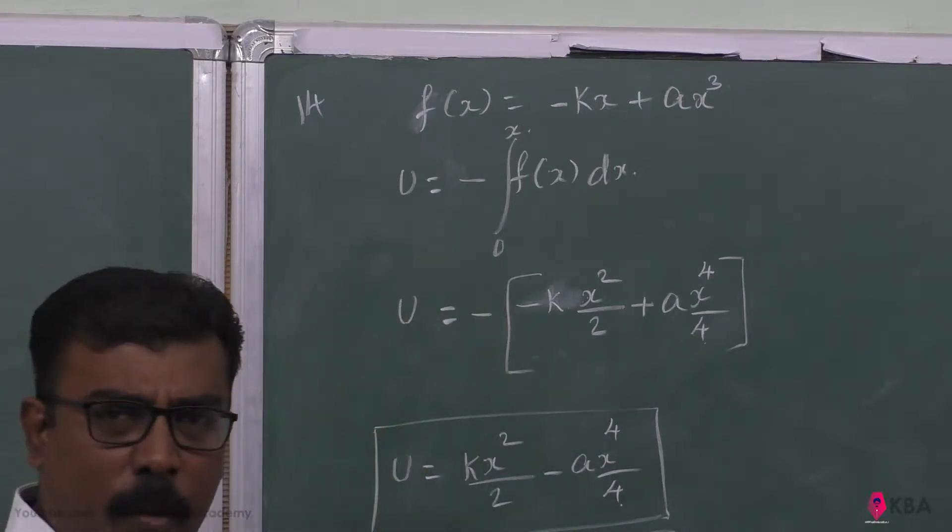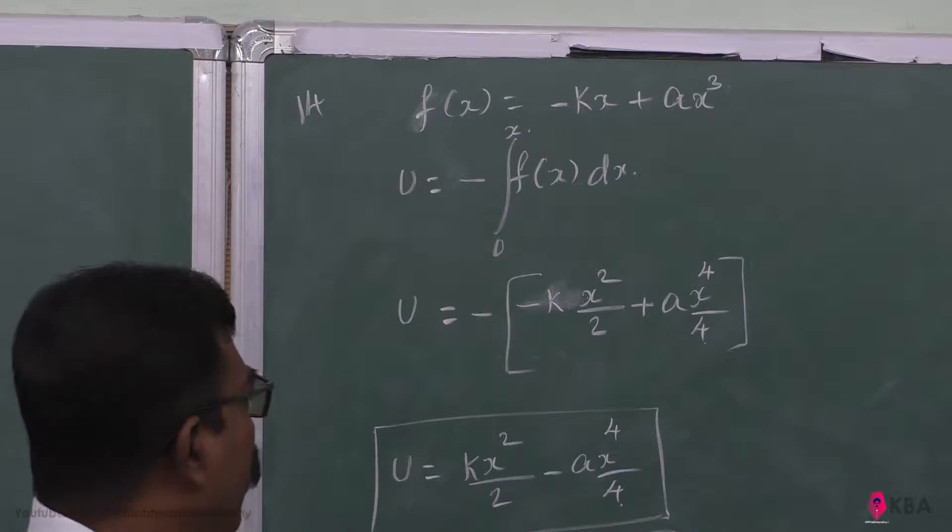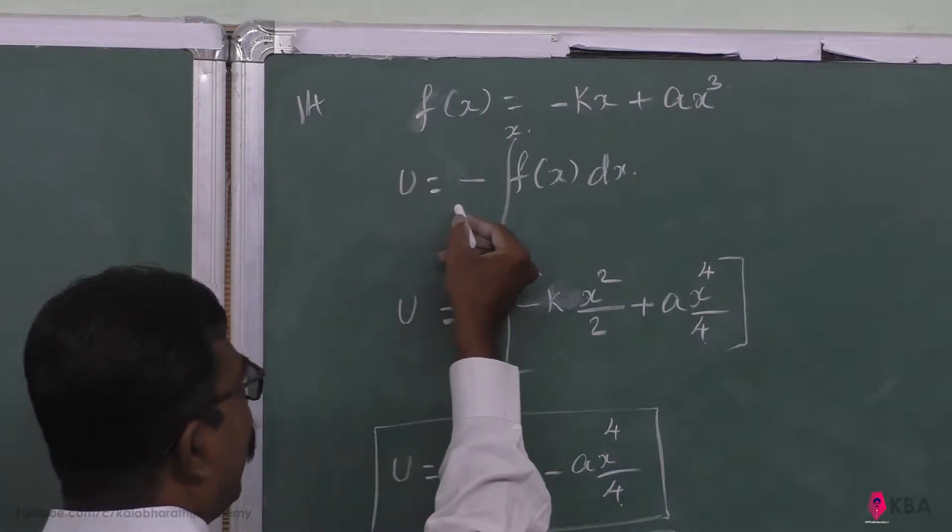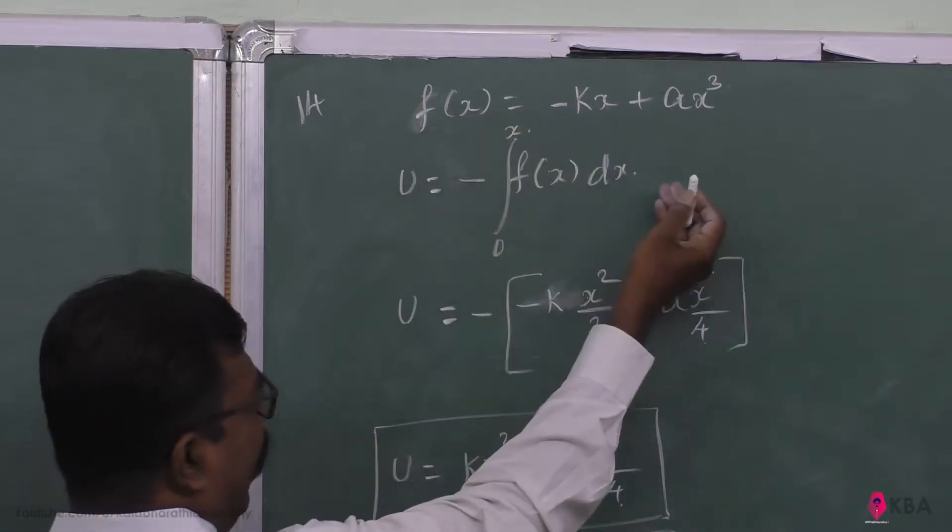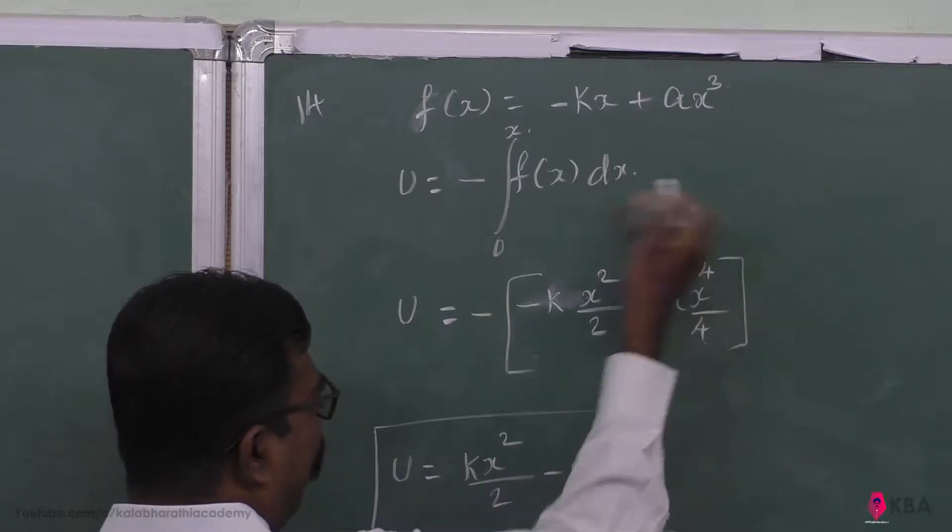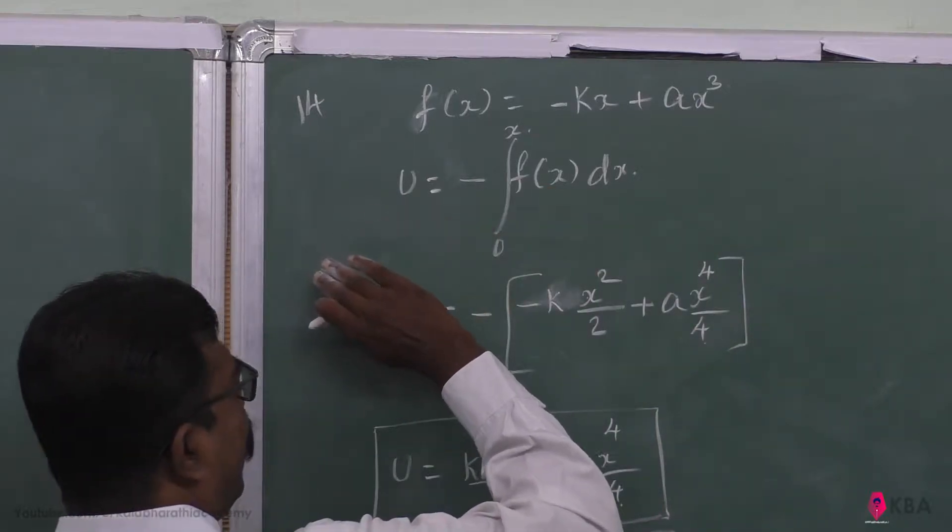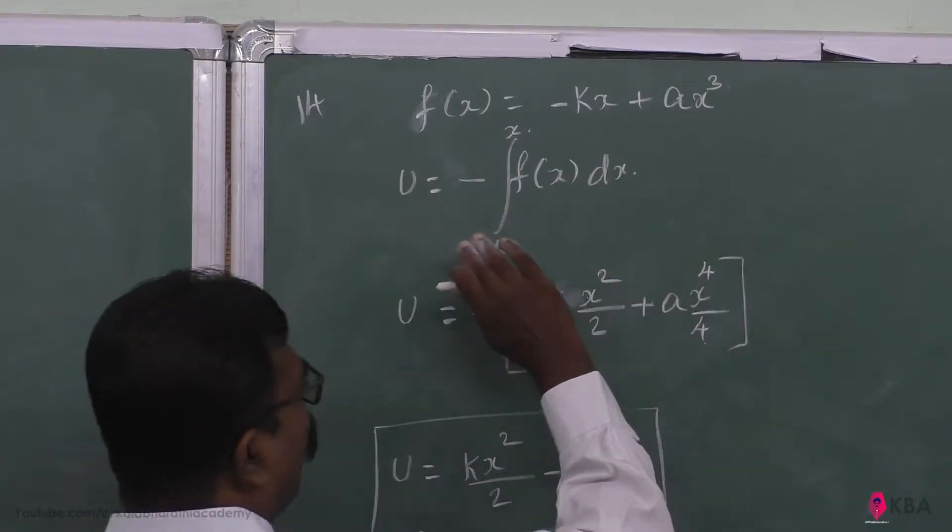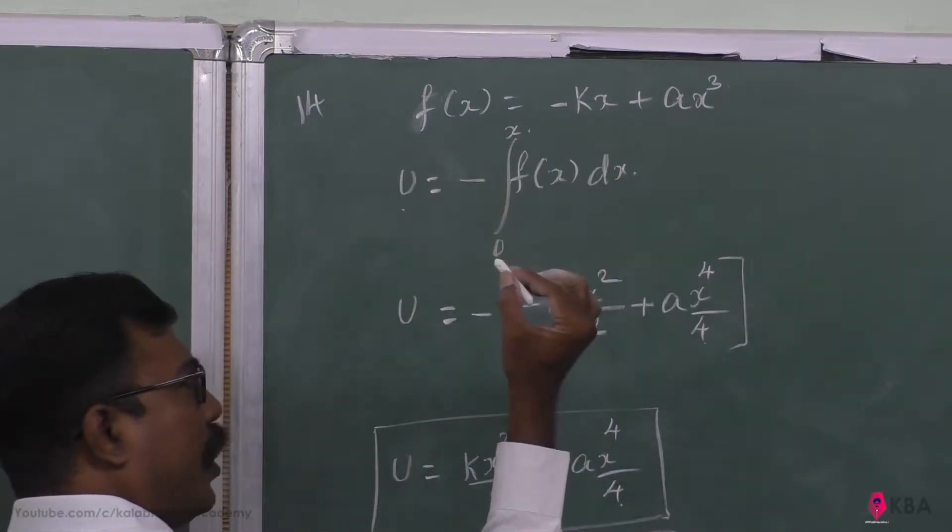If the force function is known, the potential energy function can be found. Potential energy's negative gradient gives force, so if we integrate force and multiply by minus sign, we will get potential energy.